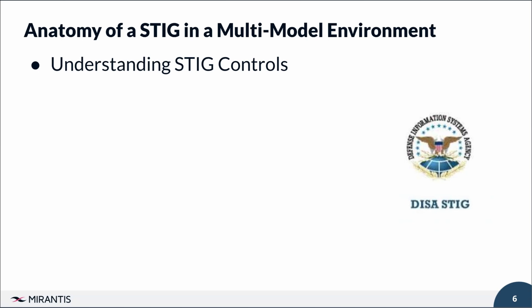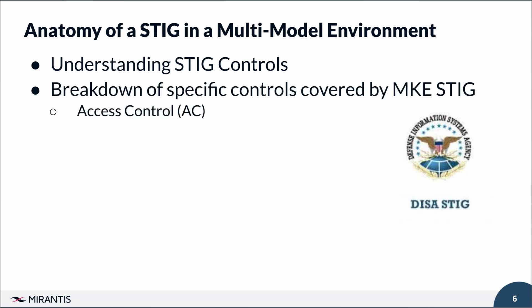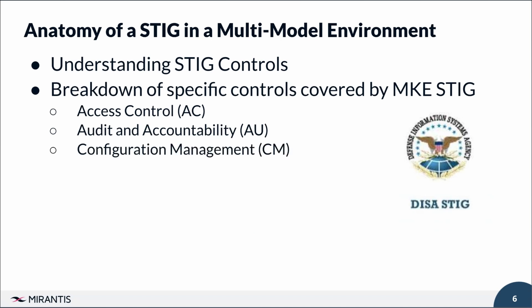Let's delve into specific controls that the MKE STIG covers. First, Access Control (AC) ensures that only authorized users can access system resources, including measures for user authentication and authorization. Audit and Accountability (AU) tracks and logs user and system activities, ensuring actions can be traced. Configuration Management (CM) maintains secure configurations for all system components, providing guidelines for setting secure defaults and performing regular configuration audits. Patch Management ensures all components are kept up to date with the latest security patches, protecting against known vulnerabilities.